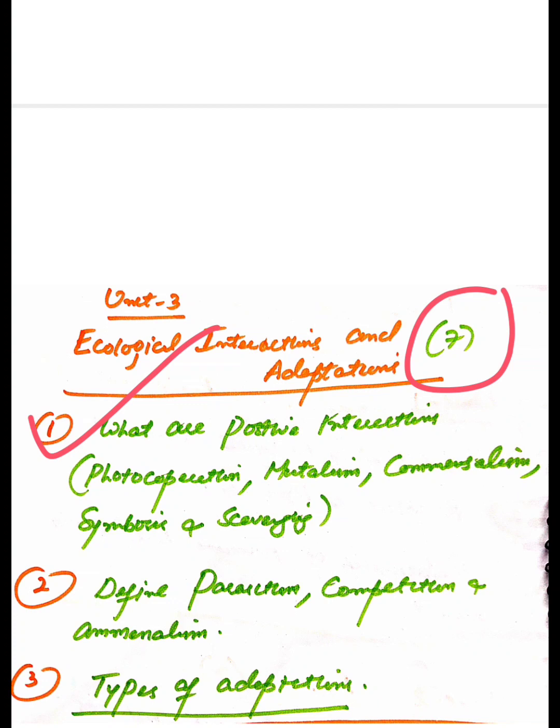These are interactions between one human or one animal and another, or one plant and another plant. When it's positive, both will benefit. Second is define parasitism, competition, and amensalism - these are negative interactions. Third is types of adaptations, in which you have to show various types of adaptations.